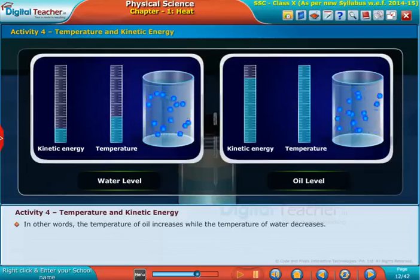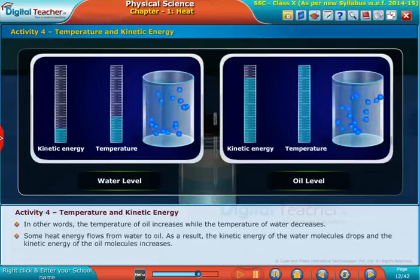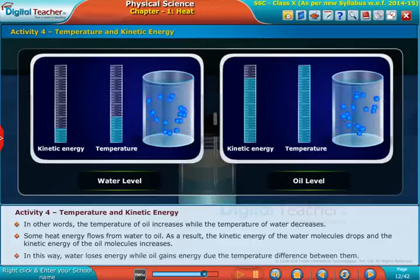Some heat energy flows from water to oil. As a result, the kinetic energy of the water molecules drops and the kinetic energy of the oil molecules increases. In this way, water loses energy while oil gains energy due to the temperature difference between them.